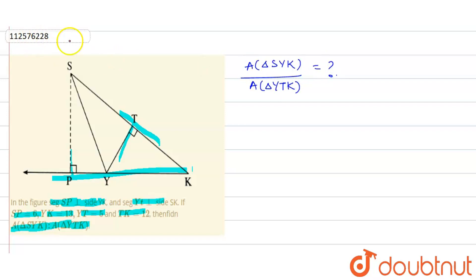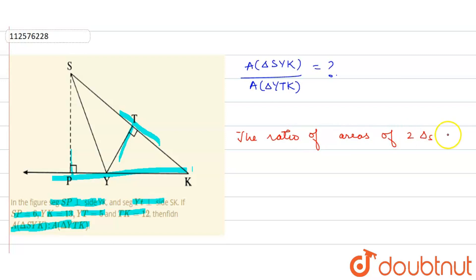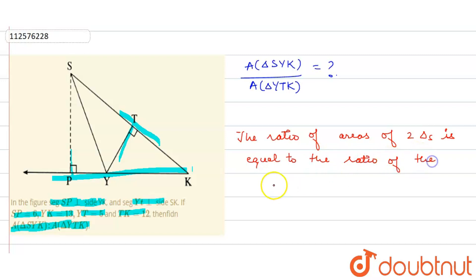Now, let's see. We know that the ratio of areas of two triangles is equal to the ratio of the products of their bases and corresponding heights.